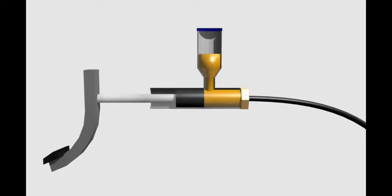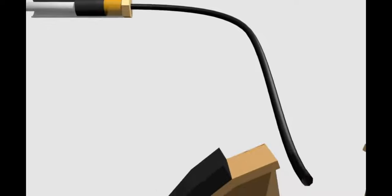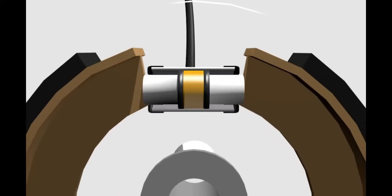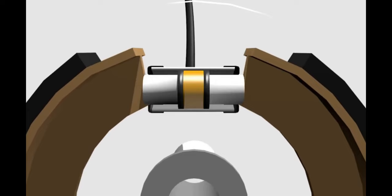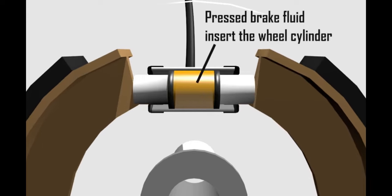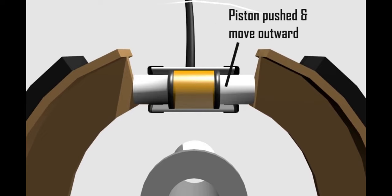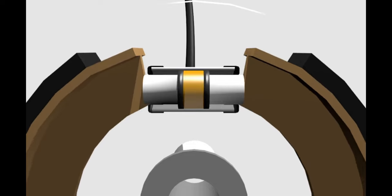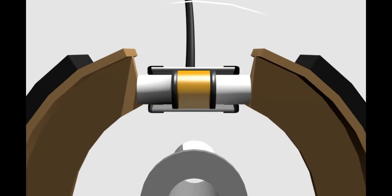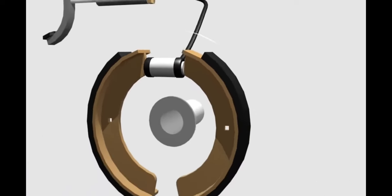Hydraulic brakes use fluid as an intermediary to move pressure from the brake pedal to the drum brake. When we press the brake pedal, the push rod is pushed so that brake fluid in the master cylinder moves out through the hose to the wheel cylinder. The wheel cylinder converts the energy in the brake fluid into physical movement. The pressed brake fluid exits the master cylinder into the wheel cylinder, pressing the piston so that two pistons move outward, producing opposing movements that cause the brake shoes to splay.